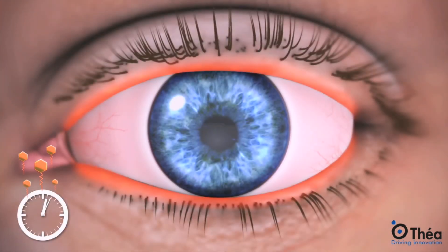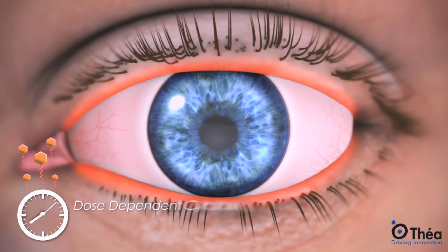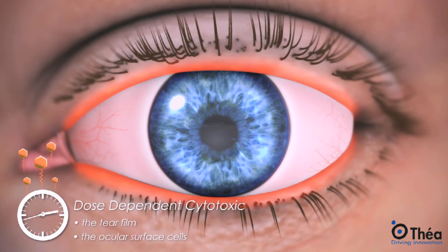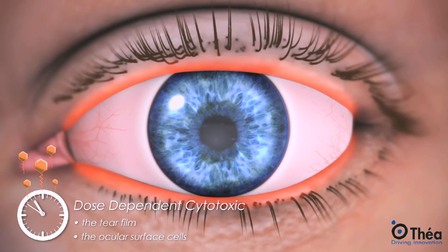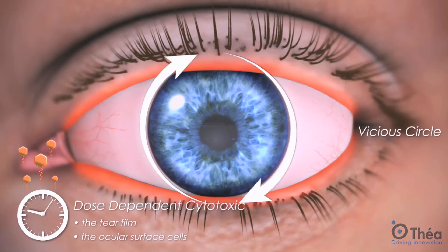In summary, BAC by different mechanisms is directly dose-dependently cytotoxic to the tear film and the ocular surface cells, and stimulates inflammatory disorders at the origin of a vicious circle of ocular surface disease.